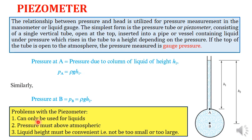Now, what are the limitations of this piezometer? First, it can only be used for liquids — if we need to determine pressure for air or gases, it will be very difficult. Second, the pressure of the liquid must be above atmospheric pressure, because if it is not, the liquid level will go down rather than rise in the tube, giving you a negative column height which is not a logical measurement.